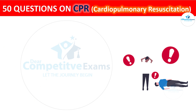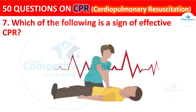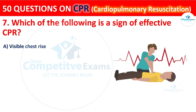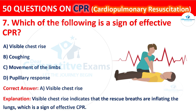Question 7: Which of the following is a sign of effective CPR? Your options are: Visible chest rise, Coughing, Movement of the limbs, or Pupillary response. The correct answer is A: Visible chest rise. Visible chest rise indicates that the rescue breaths are inflating the lungs, which is a sign of effective CPR.